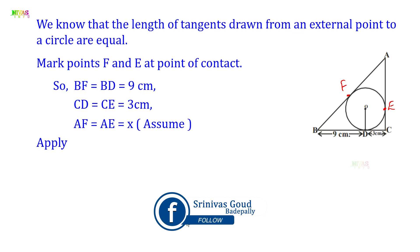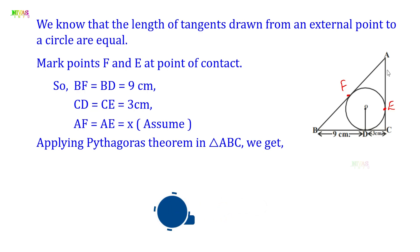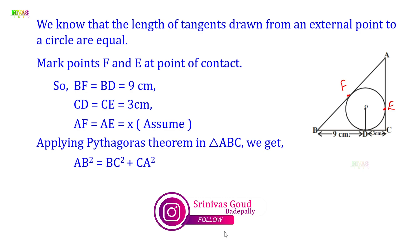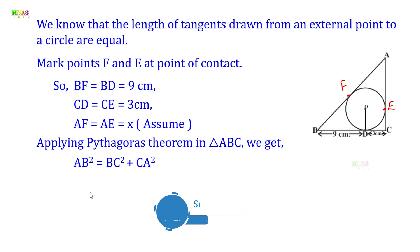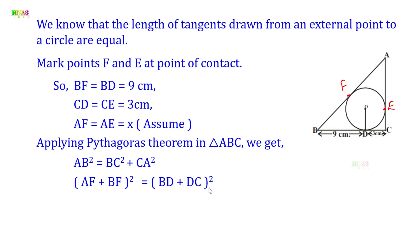Now we apply the Pythagoras theorem in triangle ABC. AB square is equal to BC square plus CA square. AB is divided into two parts: AF and BF. BC is divided into BD and DC. AC is divided into AE and CE. So AB equals AF plus BF whole square, BC equals BD plus DC whole square, and CA equals CE plus AE whole square.